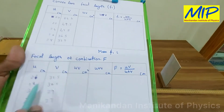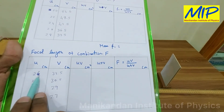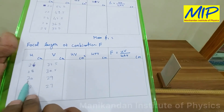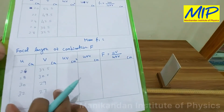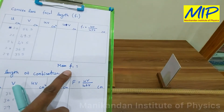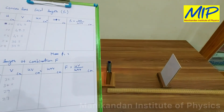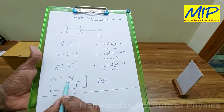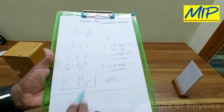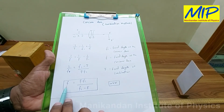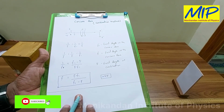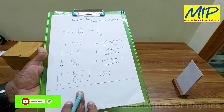Using these observations: for u = 26 cm, v = 33.5 cm; for u = 28 cm, v = 30.5 cm; for u = 30 cm, v = 29 cm. Using these values I find the focal length of the combined system F, and together with F1 from the first table, I calculate the focal length of the given concave lens by the combination method. If you like this video, share it with your friends and subscribe to our channel. Thanks for watching.